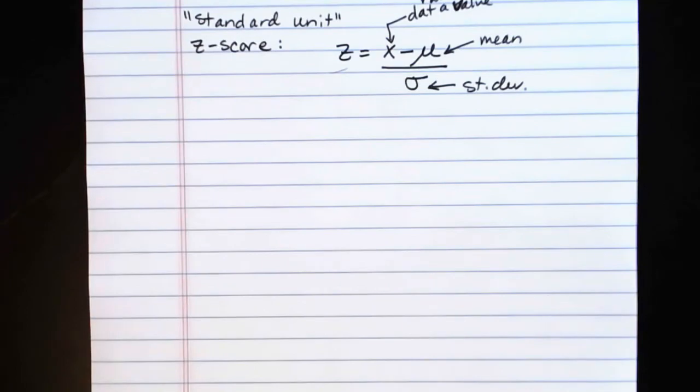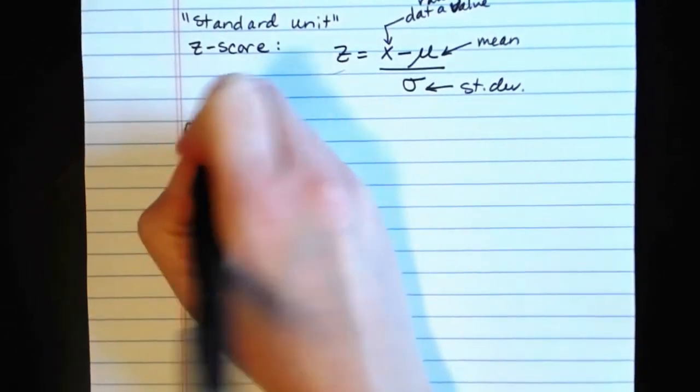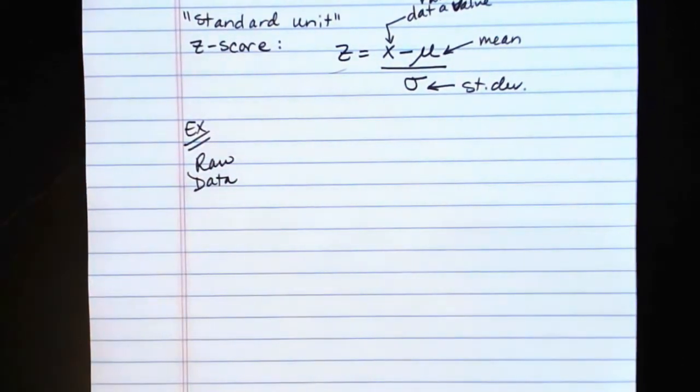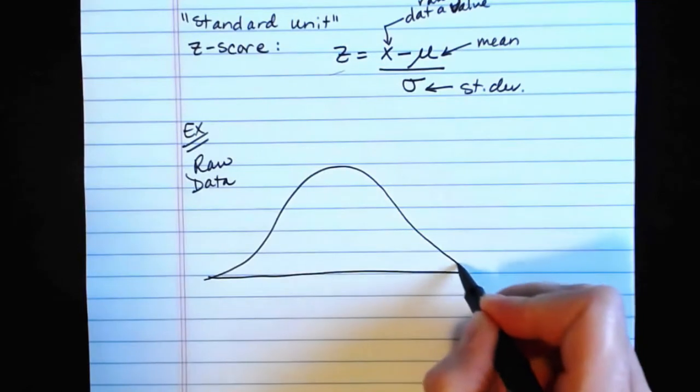So, let's go back to our example that we were talking about with IQ. Let's look at the distribution for the raw data values. These would be the data that you actually would collect. Now, when we talked about IQ, we said the IQ had a mean of 100.